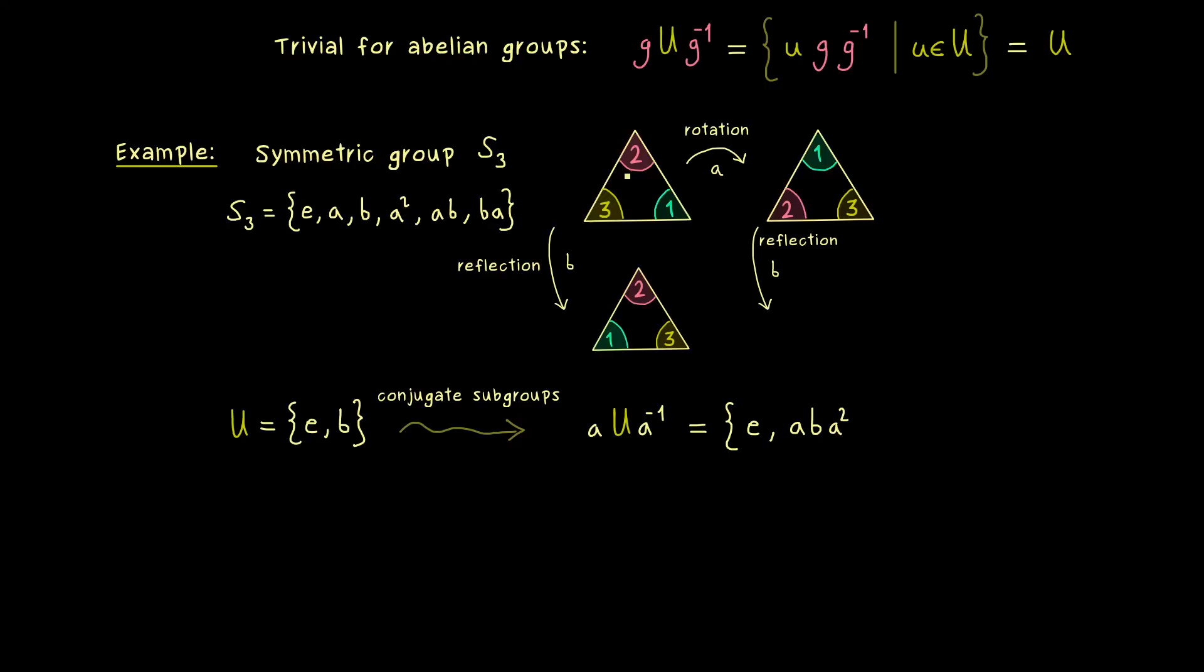Hence first we apply the rotation a and then the reflection b. So this is what we get and then we have to use the rotation a twice. So this is not so complicated and the result you can see here. And now you can compare that with our discussion from part 7. And then you see that this is actually just the element ba. So we can simply shorten that to ba. Therefore our conjugate subgroup here is also a subgroup with two elements. But definitely not the same as U.